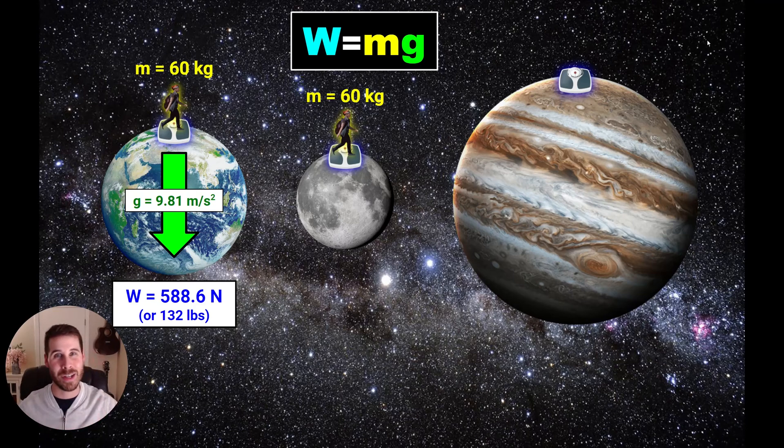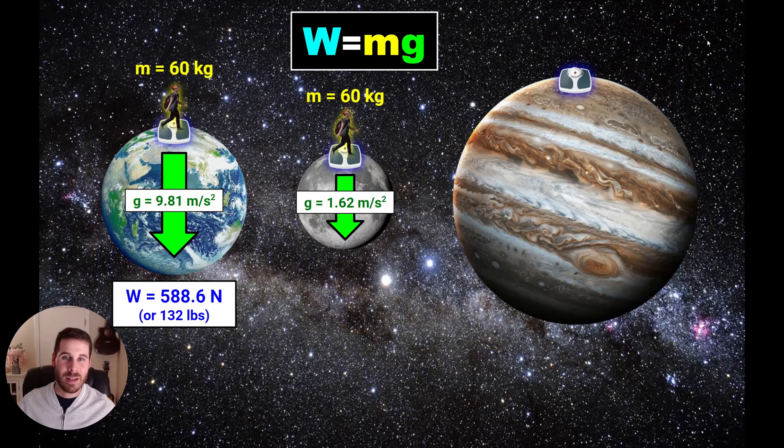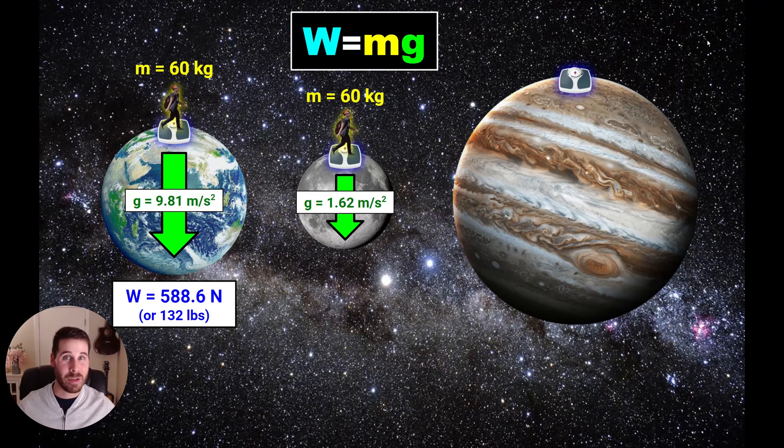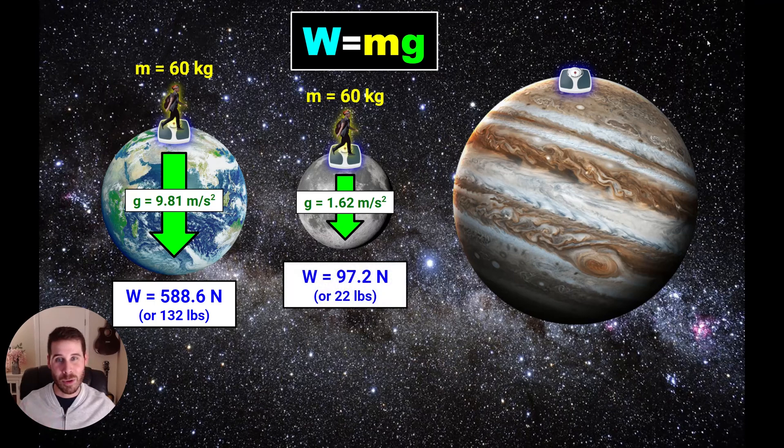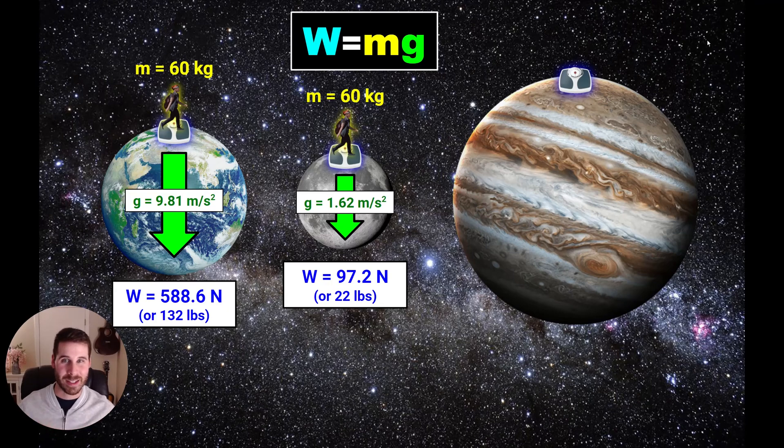So this 60 kilogram person on the Moon is only going to be experiencing this much gravity, 1.62 meters per second squared. So that's a much lower number than 9.81. That means there's less gravity on the Moon. So if we multiply this mass by this gravity, then this person standing on a scale on the Moon, the scale is only going to read 97.2 Newtons of weight, or approximately 22 pounds. So if you jump from Earth to the Moon, suddenly your weight changes very drastically.